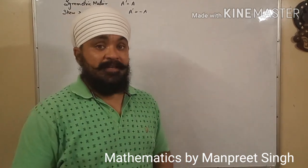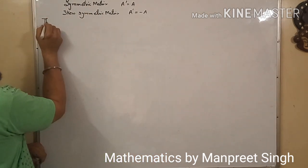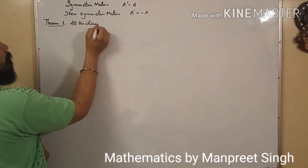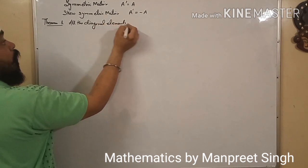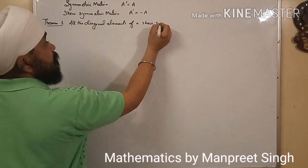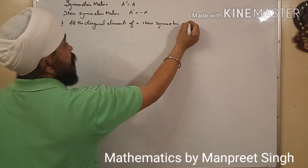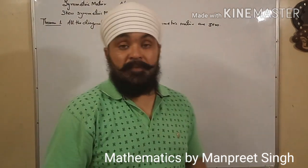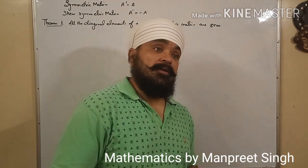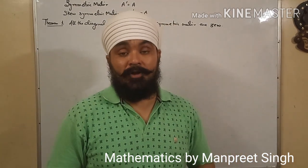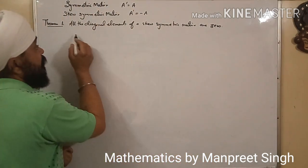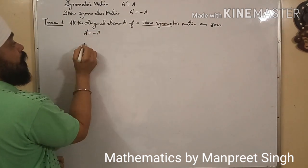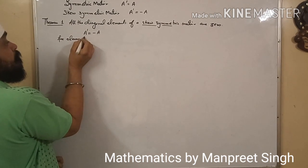Now we are going to take Theorem 1, which I have also covered in the previous lecture. Theorem 1 states that all the diagonal elements of a skew symmetric matrix are 0. We need to prove this theorem again because we will need it for the next theorem. For a skew symmetric matrix, we know A transpose is equal to minus A. Going to the element level, matrix A has element Aij.